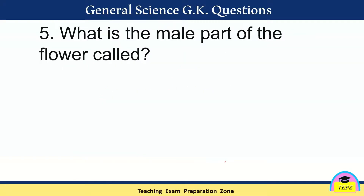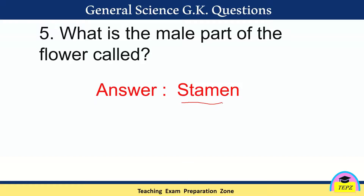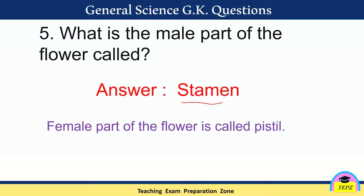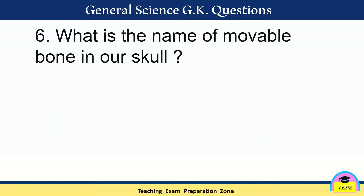What is the male part of the flower called? The answer is stamen. Some flowers have only a male part, some have only a female part, and some have both. The male part of the flower is called stamen, and the female part of the flower is called pistil.